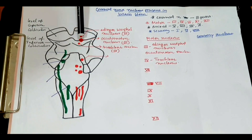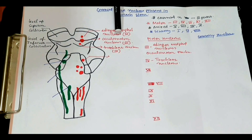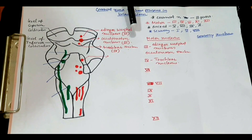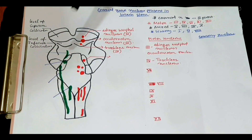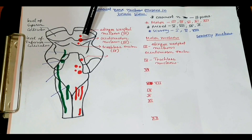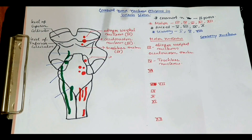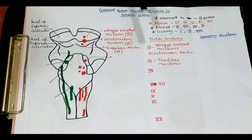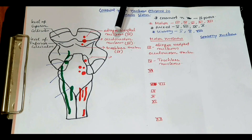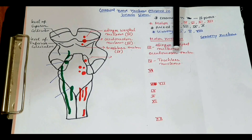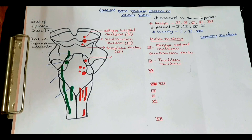At the level of the superior colliculus, there is a nucleus called the Edinger-Westphal nucleus, which is the motor nucleus of the third cranial nerve. Below that there is another motor nucleus called the oculomotor nucleus, which is also a motor nucleus of the third cranial nerve. So for the third cranial nerve we have two motor nuclei: the Edinger-Westphal nucleus and the oculomotor nucleus.